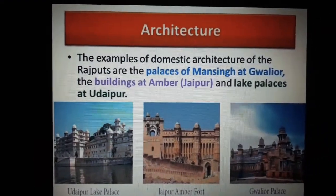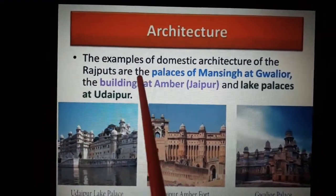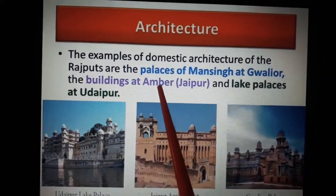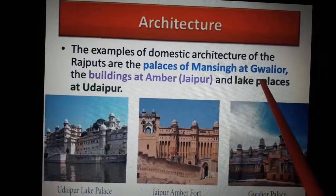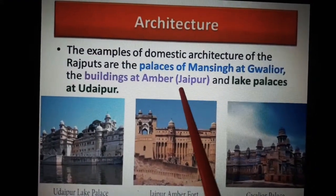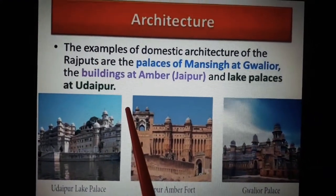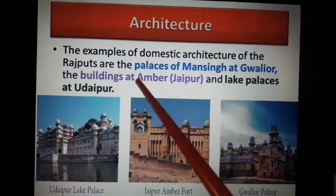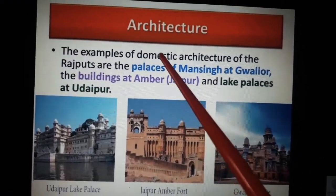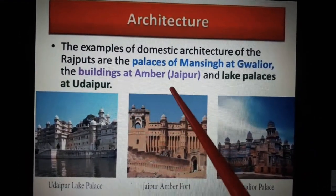Next we will see domestic architecture of the Rajputs. Examples of domestic architecture of the Rajputs are the Palaces of Man Singh at Gwalior, the buildings at Amber — that is at Jaipur — and the Lake Palaces at Udaipur. These are the domestic architectures of Rajputs. Domestic in the sense that these are the households where they lived and ruled.